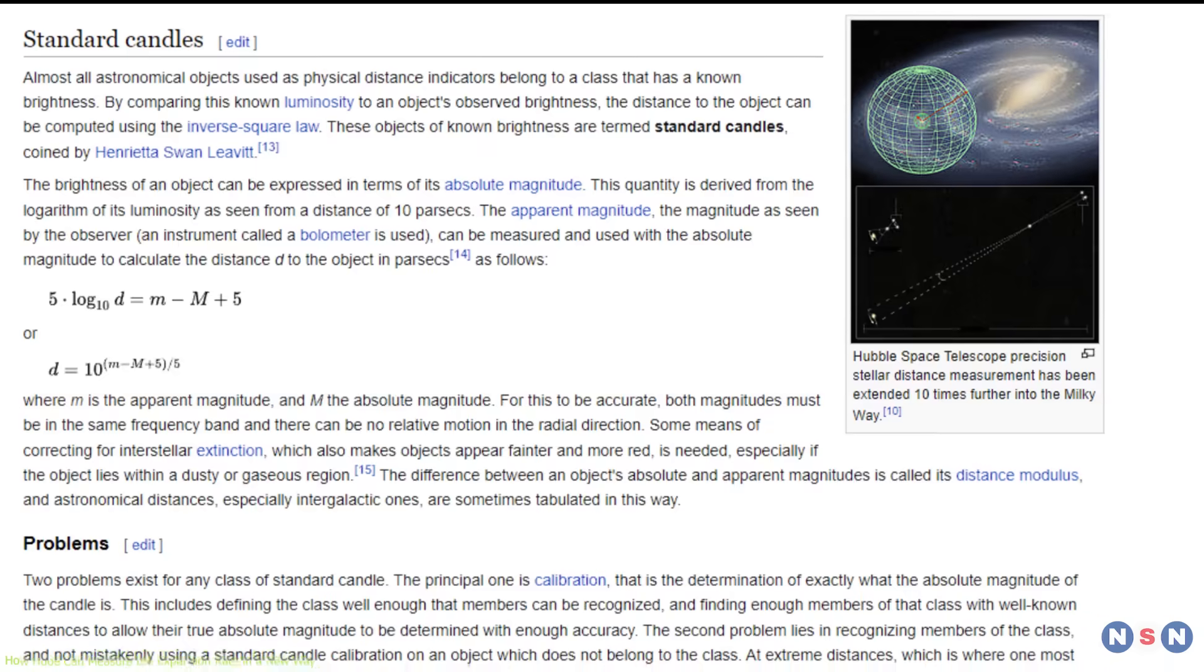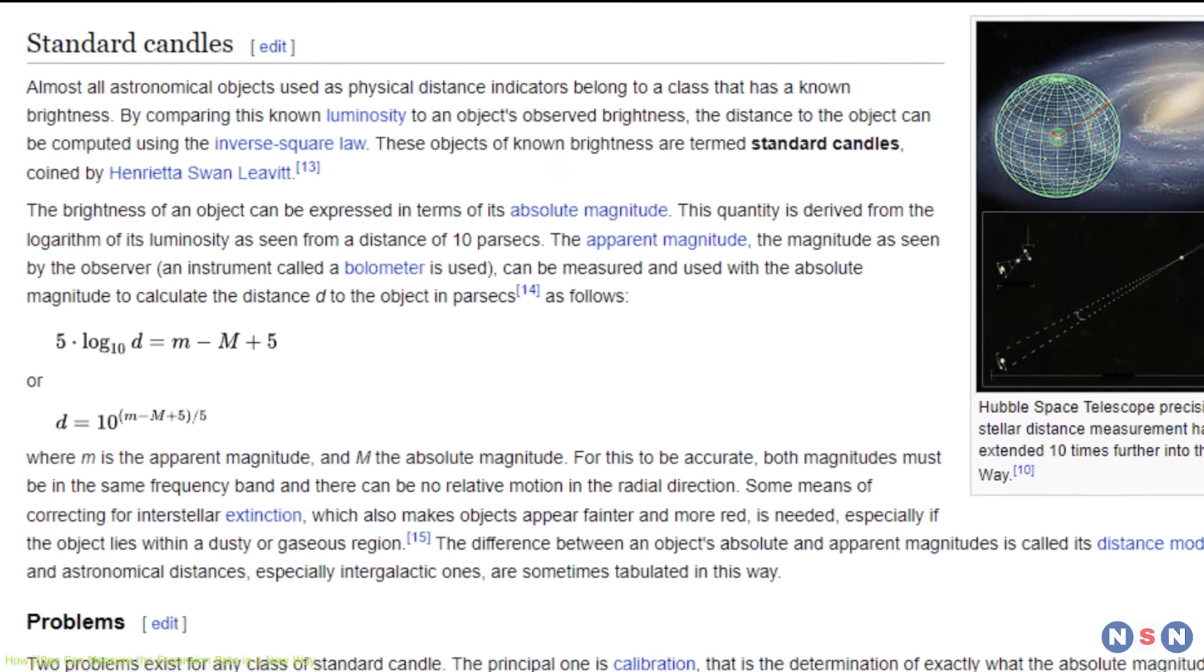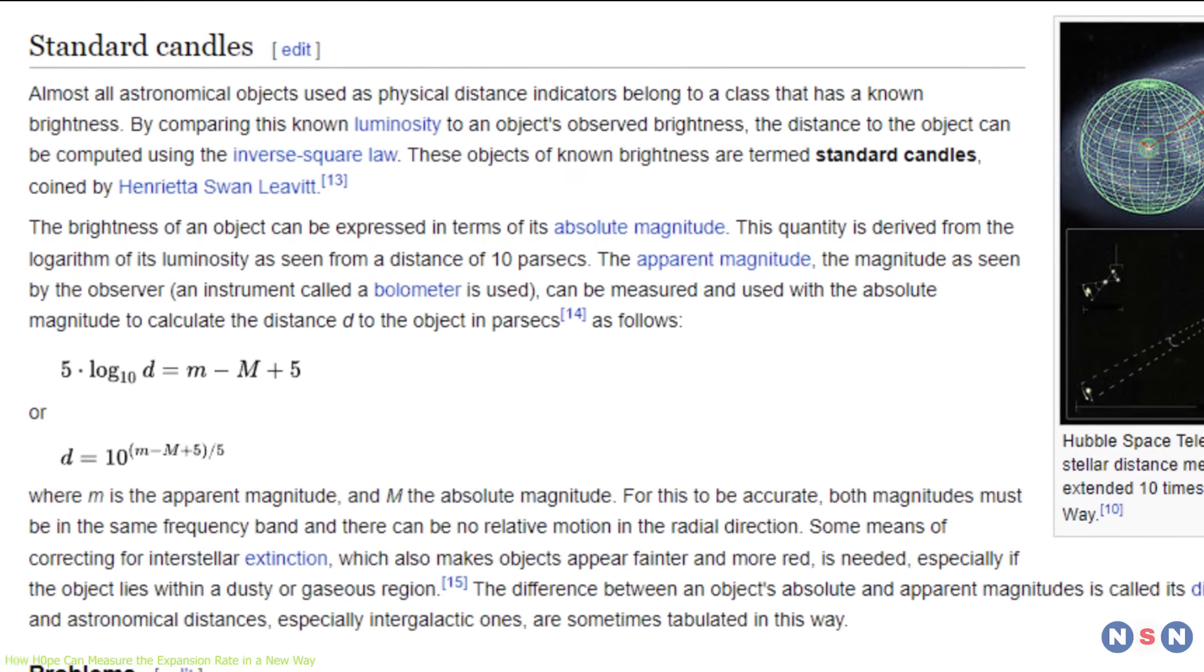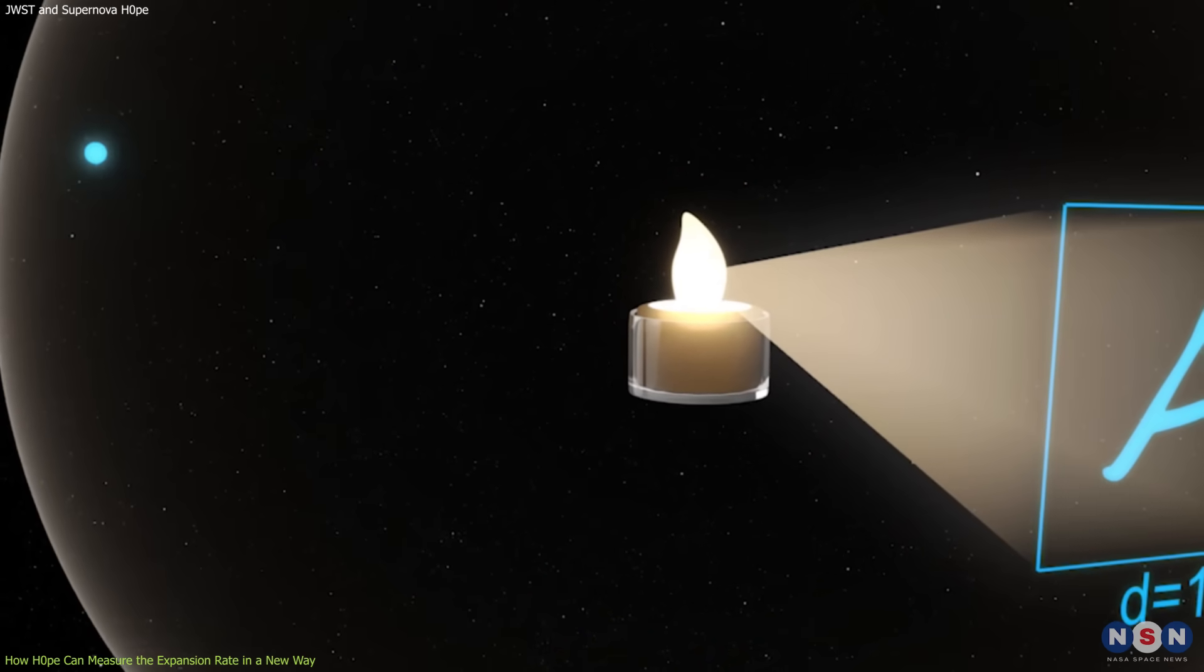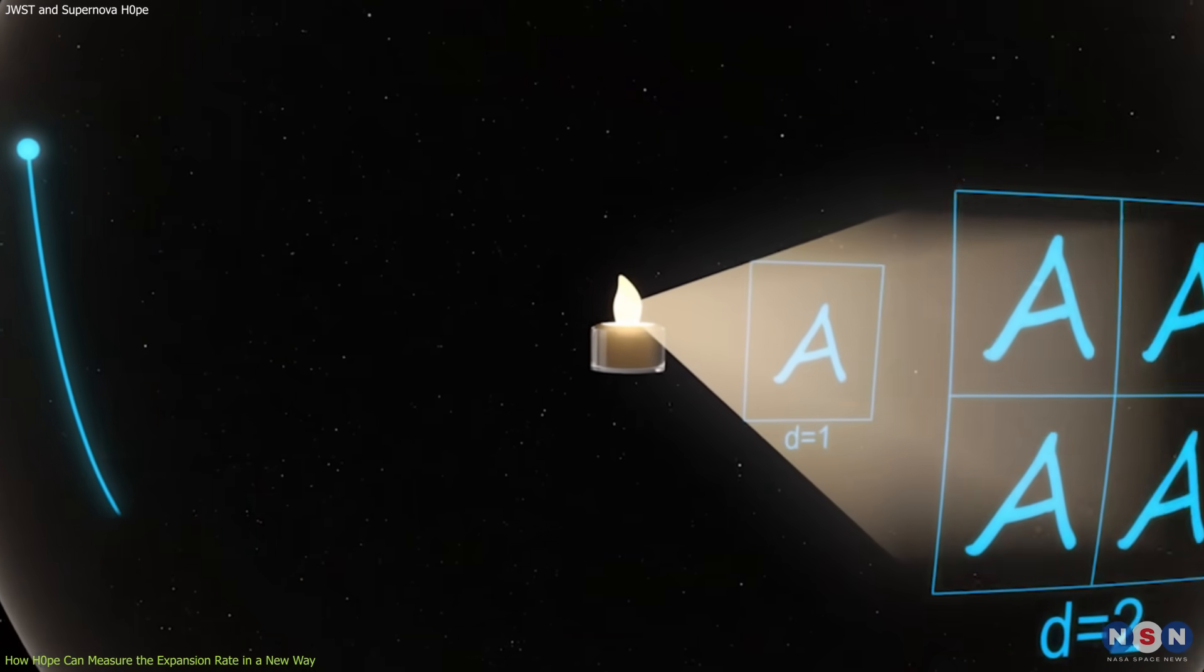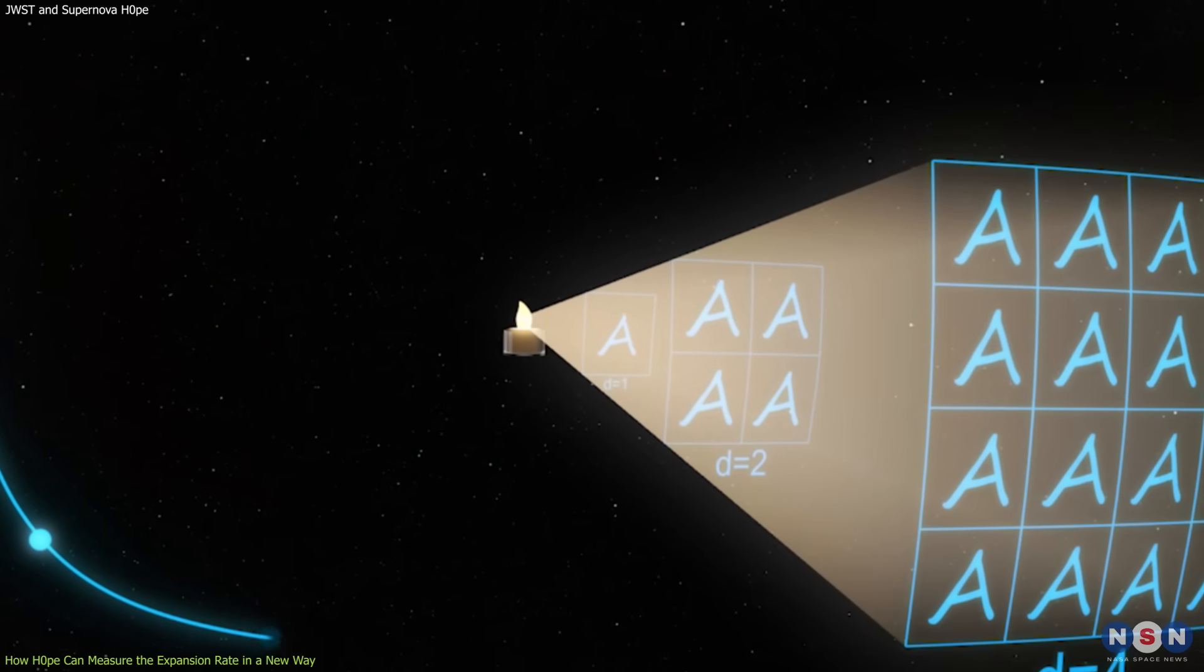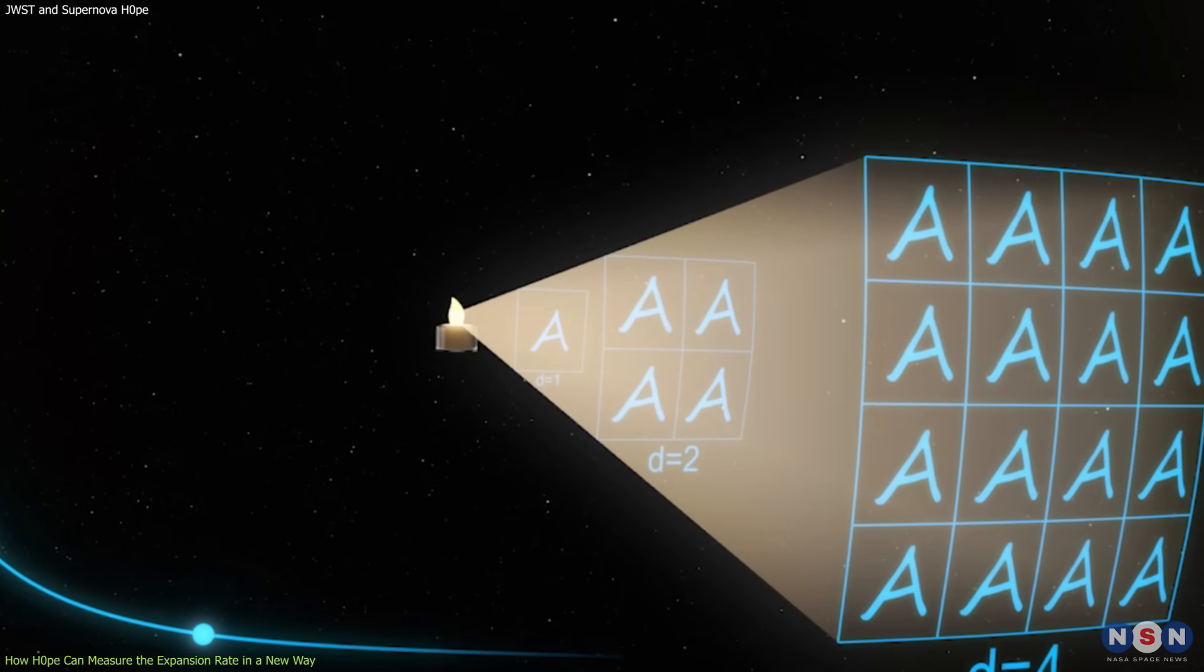Another way to measure H0 is to use standard candles, which are objects whose brightness or luminosity is known or can be calculated. By comparing their apparent brightness, how bright they appear to us, with their intrinsic brightness, how bright they actually are, we can estimate their distance from us.